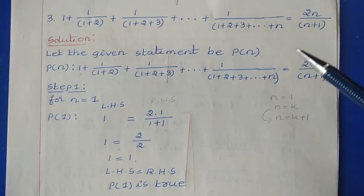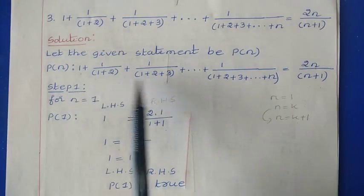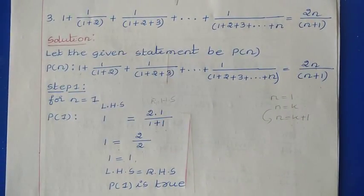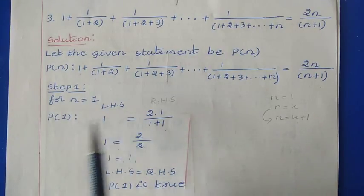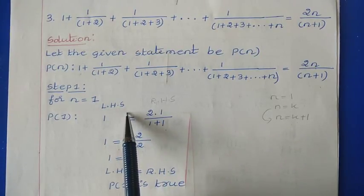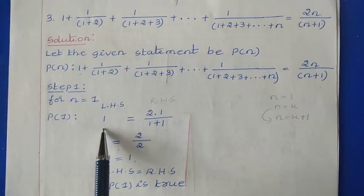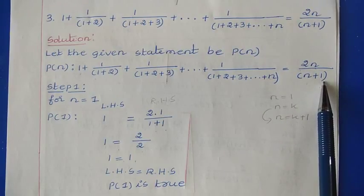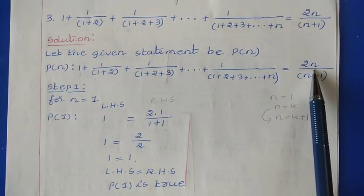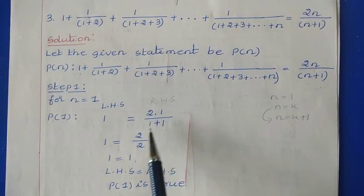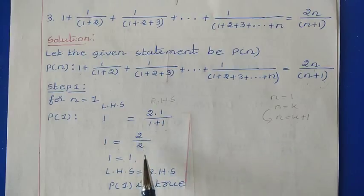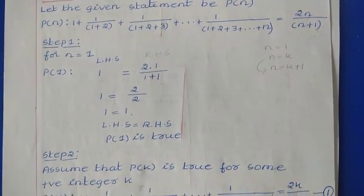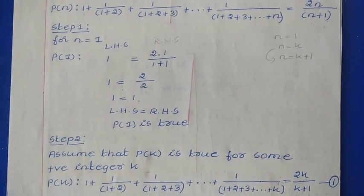Let the given statement be P(N). The first step is to prove the given statement for N=1, that is P(1). From the left hand side, we take the first term, which is 1. From the right hand side, we take 2N/(N+1) and put N=1: 2×1/(1+1) = 2/2 = 1. So LHS equals RHS.